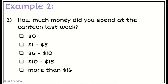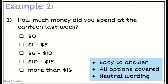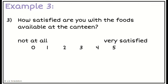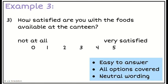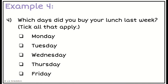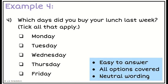This question asks: how much money did you spend at the canteen? It's easy to answer because people can tick one of the options, so it's very quick and easy. Do we have all of the options covered? The first one starts at $0, then $1 to $5, $6 to $10, $10 to $15, more than $16 — covering the whole range. How satisfied are you with the food? There's a range from 0 to 5, the wording is quite neutral, and it's easy to answer — people just circle it. What days did you buy your lunch? Again, all the answers are listed so people can just tick. All weekday options are covered and the wording is quite neutral.